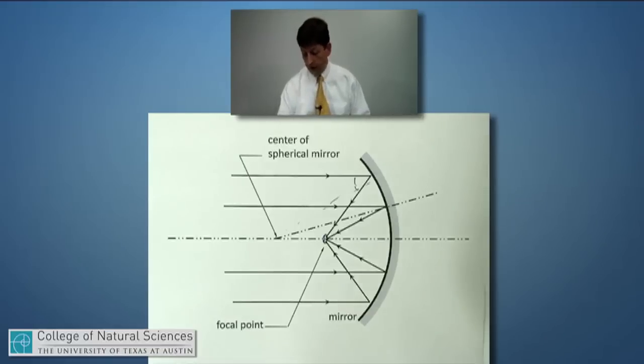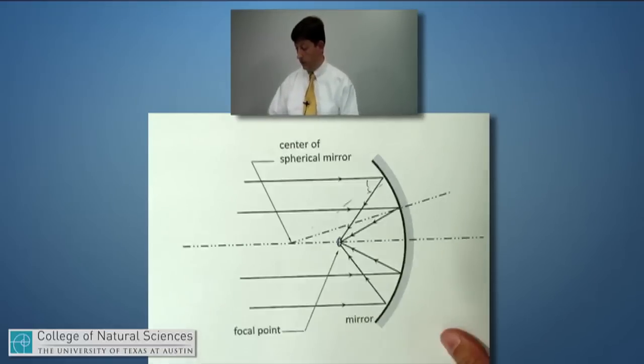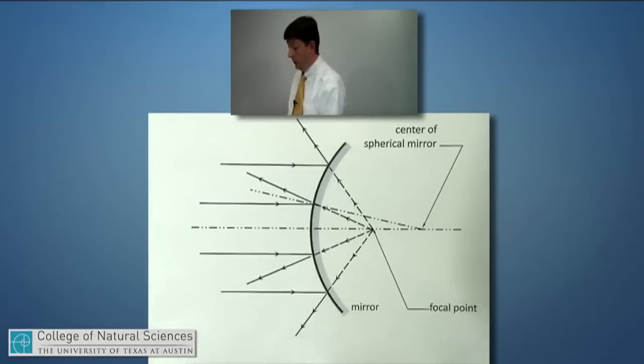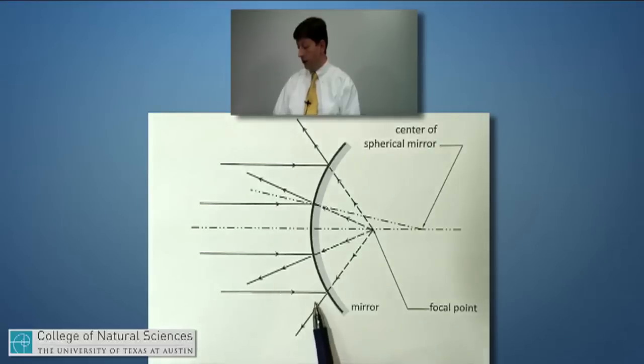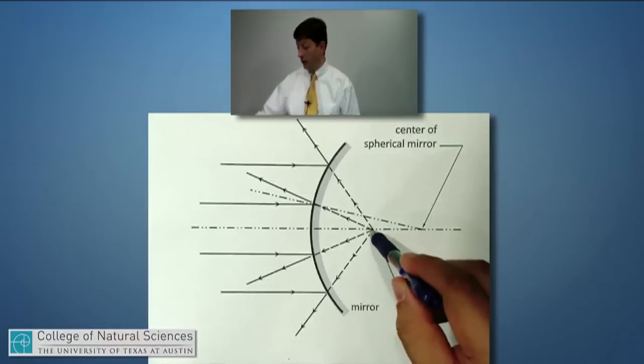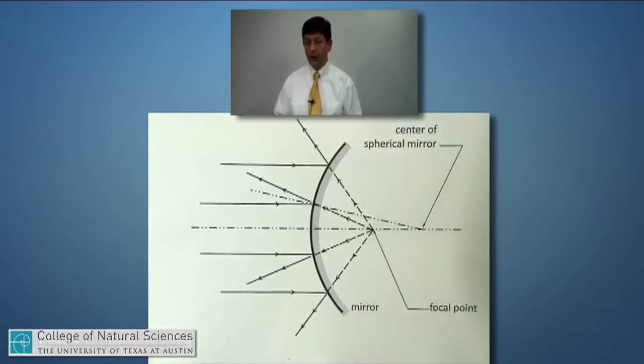For a convex mirror, light rays actually never reach the focal point. Parallel rays coming in reflect out at different angles, and our mind never would actually see all those light rays come in from a certain point. However, we would perceive that they came from a common point. They would come from a common point back behind the mirror.